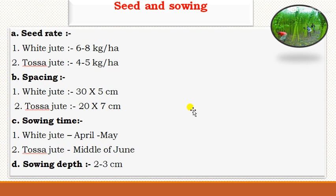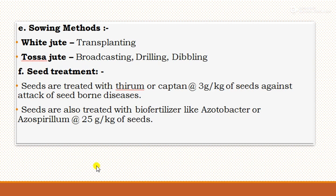For seed sowing: the seed rate for white jute is 6 to 8 kg per hectare, and for Tossa jute it is 4 to 5 kg per hectare. Spacing for white jute is 30 × 5 cm, and for Tossa jute it is 20 × 7 cm. Sowing time for white jute is April to May, and for Tossa jute it is from the 15th of June to the last week of June. Sowing depth is 2 to 3 cm as the seeds are very small. The sowing method for white jute is transplanting, while for Tossa jute, broadcasting, drilling, and dribbling are the important methods.